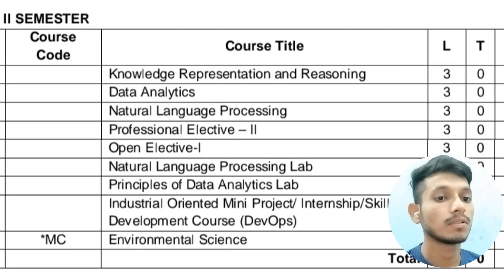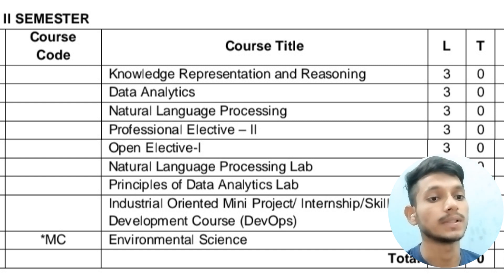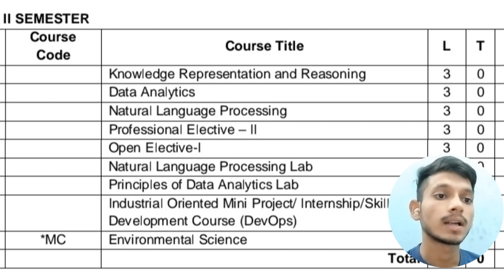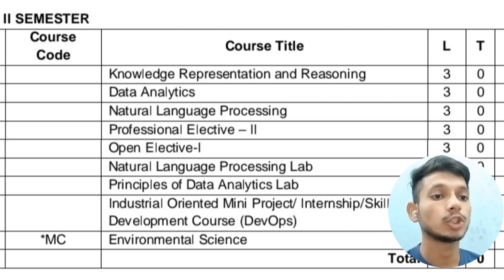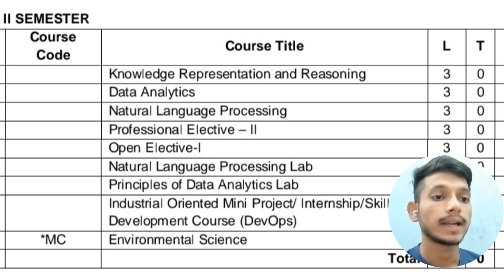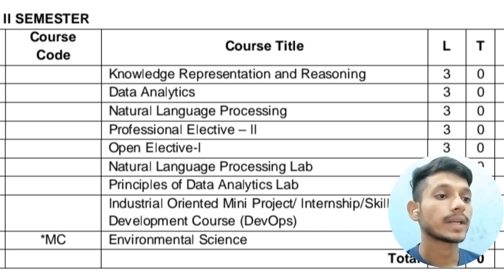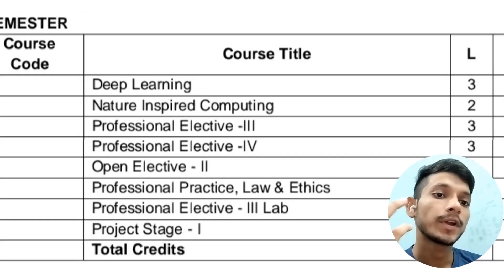In the second semester of third year, you will have nine subjects including labs and a non-credited subject. The subjects are: Knowledge Representation and Reasoning, Data Analytics, Natural Language Processing, Professional Elective 2, Open Elective 1, an NLP Lab, a Principles of Data Analytics Lab, and an Industrial Oriented Mini Project. The non-credited subject is Environmental Science, and there are 20 credits total for this semester.